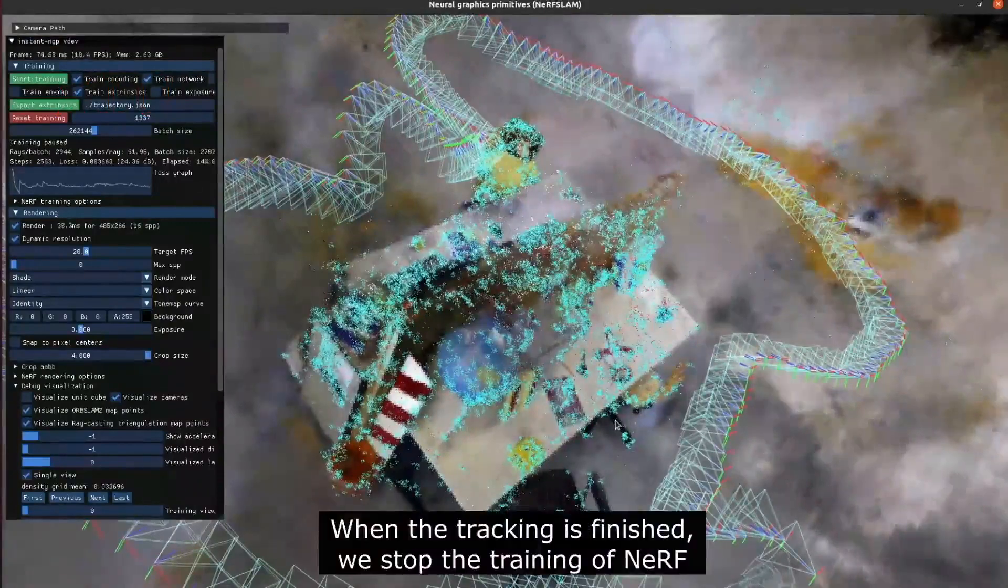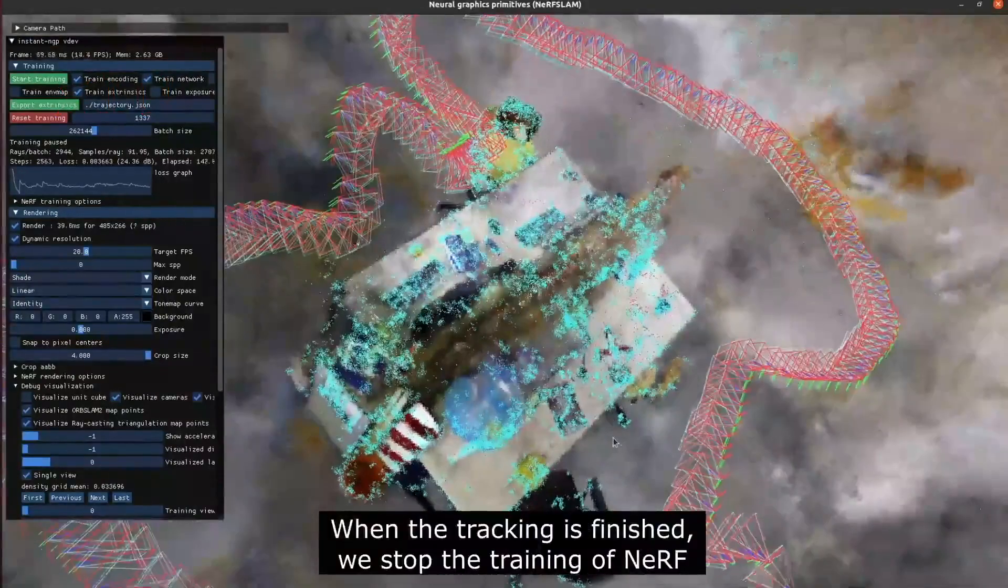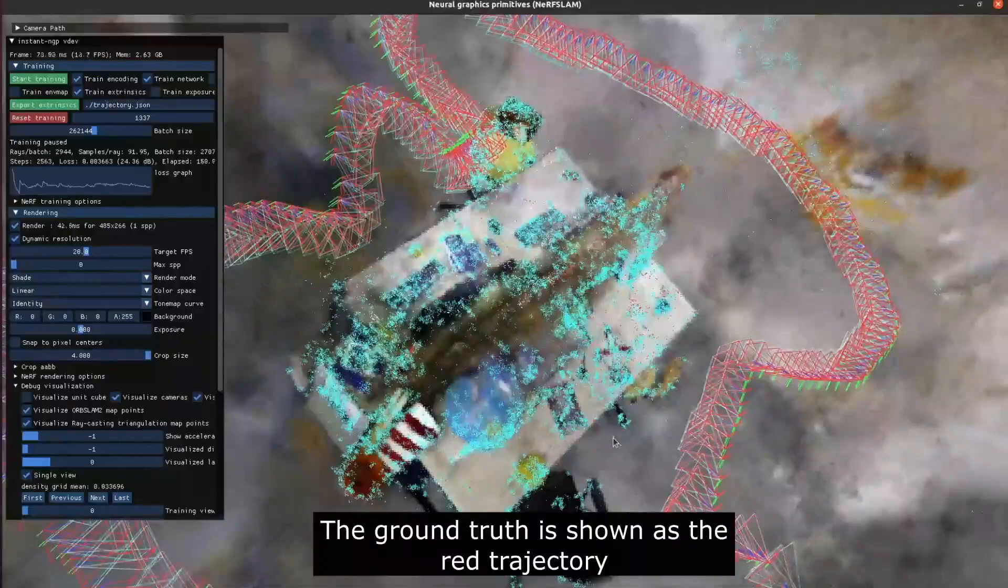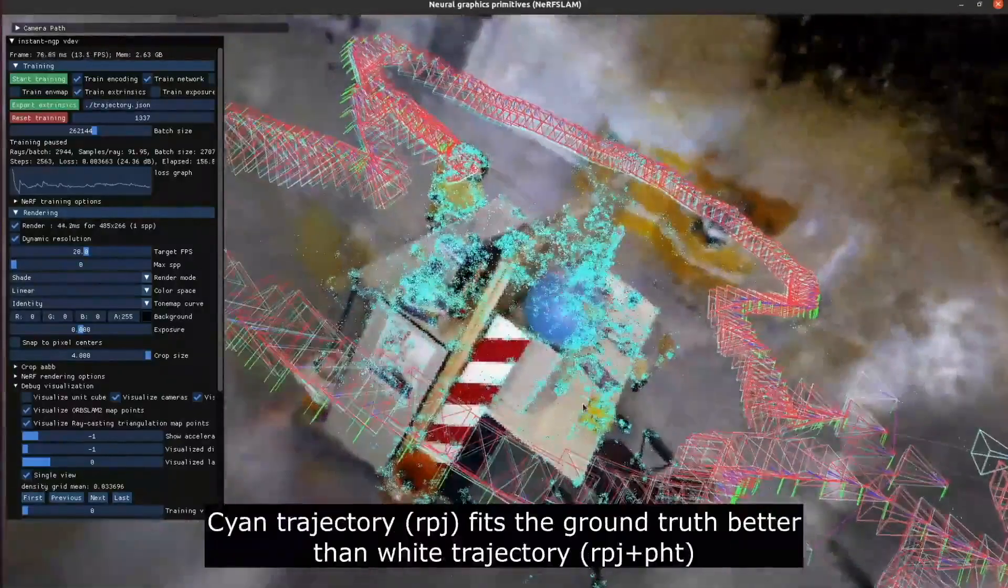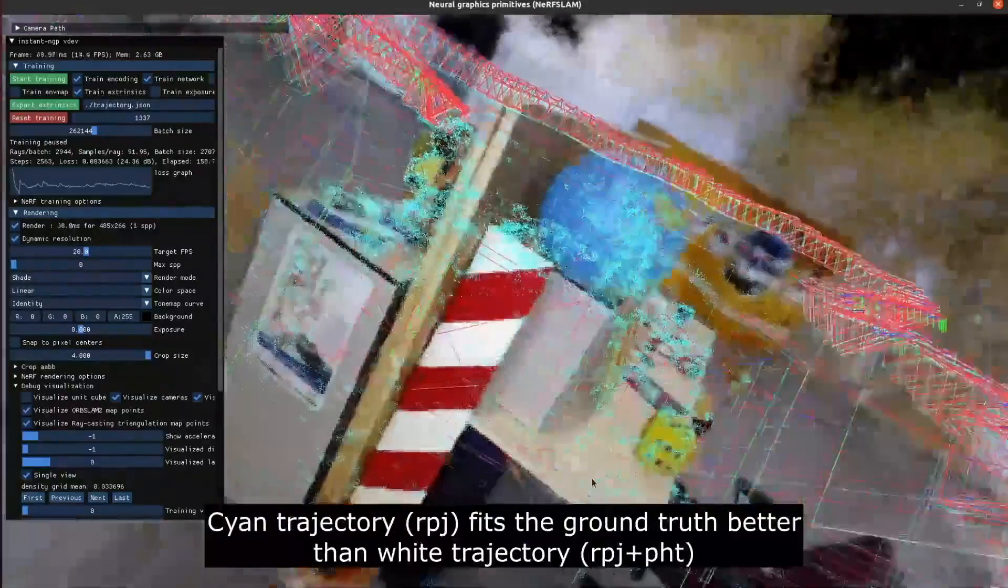When the tracking is finished, we stop the training of NeRF. The ground truth is shown as the red trajectory, where the cyan trajectory fits the ground truth better than the white one.